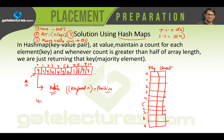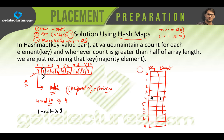The first number is 4. We do 4 mod 10, which gives position 4. At that location we store the key 4 with count 1. Next time 4 appears, we increment the count to 2. The next element is 1: 1 mod 10 gives position 1, so we store 1 with count 1. The next number is 4 again — 4 mod 10 gives position 4, which already exists, so we just increment the count.